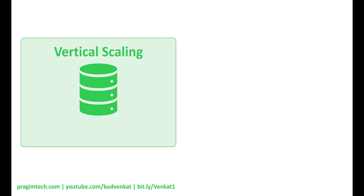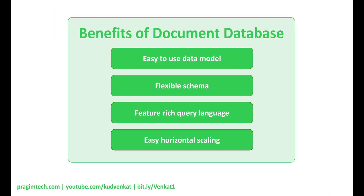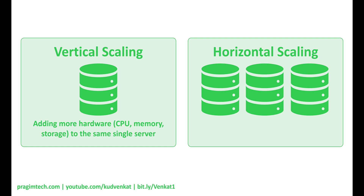Most relational or SQL databases allow only vertical scaling, also called scaling up — this involves adding more resources like memory and storage to the existing database server. Vertical scaling has an upper limit beyond which you cannot just add more CPU or memory, and there is also downtime involved since you have to shut the server down to add hardware. MongoDB, on the other hand, supports horizontal scaling, also called scaling out. In horizontal scaling, data is partitioned and distributed across many servers. Scaling horizontally means adding more servers to the existing pool — you're not limited to the capacity of a single server, and there's no need to turn off existing servers to add a new one, so there's no downtime.